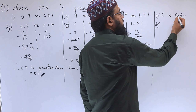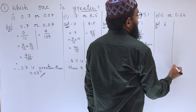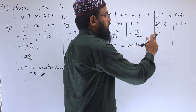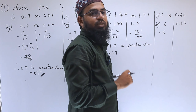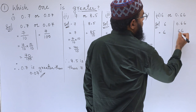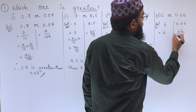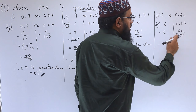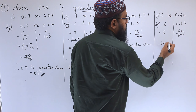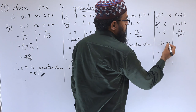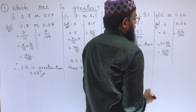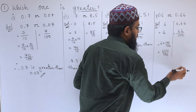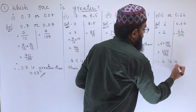Next is 6 or 0.66. For 6 there is no decimal, so we write it as is. For 0.66, there are two digits after decimal so the denominator is 100. To get the same denominators we multiply 6 by 100, giving 600 by 100. Now 600 is greater than 66, so therefore 6 is greater than 0.66.